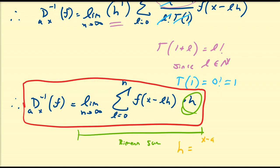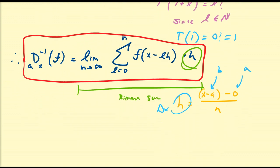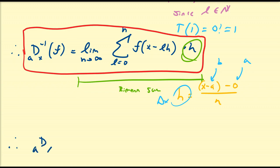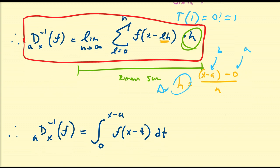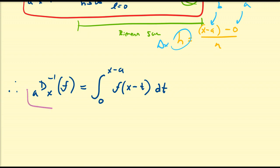So why do we say this is a Riemann sum? This h is pretty much like x minus a over n, where x minus a is our upper limit B and a is our lower limit in the integral. So this entire h term is practically like our delta x in the traditional Riemann sum representation. Once we notice that, we can say that d_ax of negative first of f, applying the limit to this sum, equals the integral from 0 to x minus a of f of x minus t, dt — calling lh equal to t.